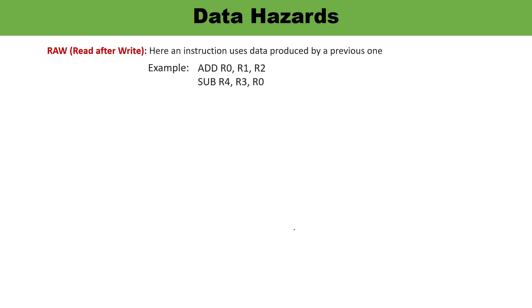First is Read After Write. Here, an instruction uses data produced by the previous instruction. In this example, instruction I1 is an add and I2 follows. The second instruction requires data from register R0, and it is dependent upon the previous instruction. Until the previous instruction is fully executed and the result is provided, it cannot be used by the next instruction. So I2 is dependent upon I1 — this is Read After Write.